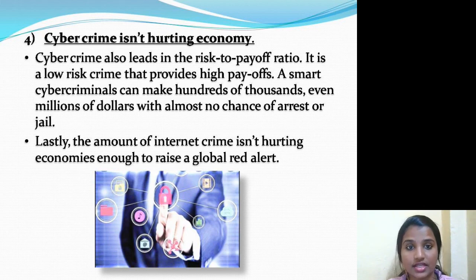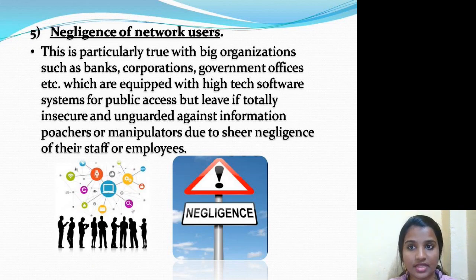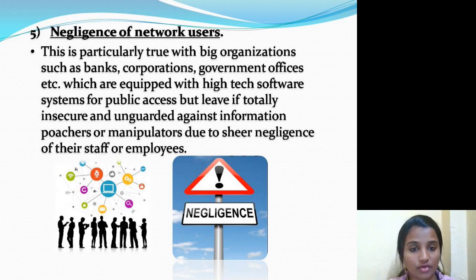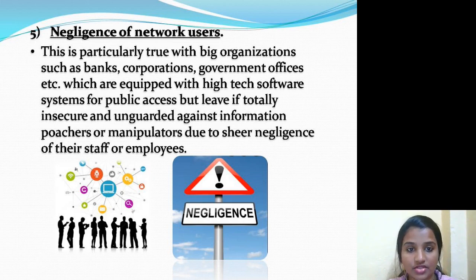The fifth reason is negligence of internet network users. This is particularly true with big organizations such as banks, corporations, governmental offices, etc., which are equipped with high-tech software systems for public access but are totally insecure and unguarded against information watchers or manipulators due to sheer negligence of staff or employers — they allow access control and security measures to take a backseat, providing scope for cyber criminals to intrude and steal or erase substantial data.